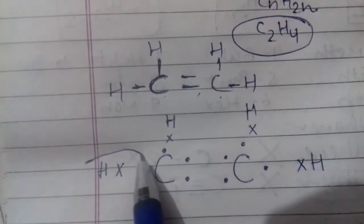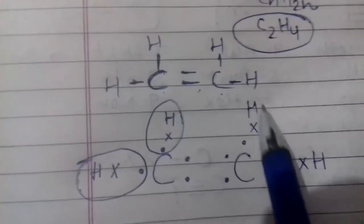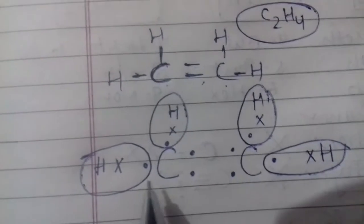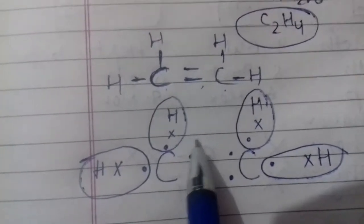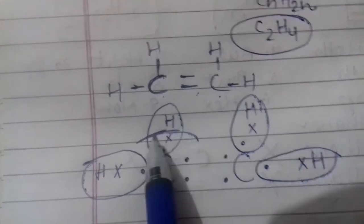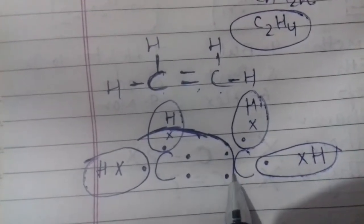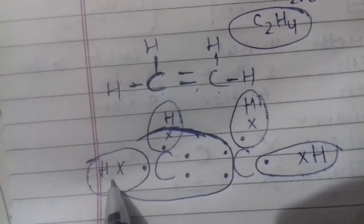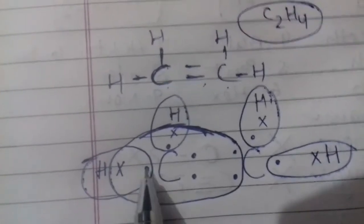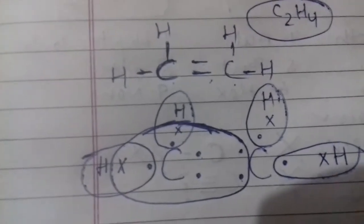Hydrogen के पास 1 electron है, 1 electron यह carbon से share करेगा। यह hydrogen भी 1 electron carbon से share करेगा। सभी hydrogen अपने एक-एक electron carbon के साथ share करेंगे, और अपने shell में 2 electron fill up कर लेंगे - noble gas configuration मिल जाएगा इनको। अब इस carbon को अपने outermost shell में 8 electron करने हैं। इससे double bond बना रहा था, तो इससे 2 electron share कर लेगा, hydrogen से 1-1 electron, total count करने पर 8 हो जाएंगे।